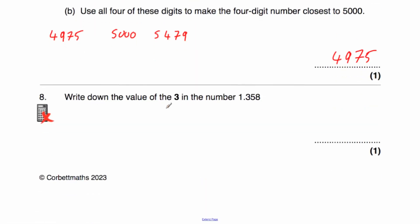Question number 8 says write down the value of the digit 3 in the number 1.358. So we've got our units, then our decimal point, then our tenths, our hundredths, and our thousandths. So we've got 3 tenths, so we could write that as 0.3. We could even write it as a fraction — 3 tenths. I tend to write it as a decimal, 0.3. So the value of the digit 3 is 0.3, or 3 tenths.